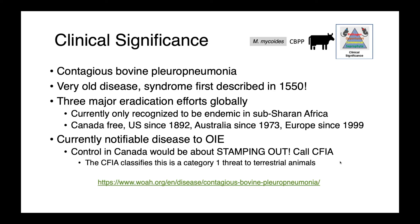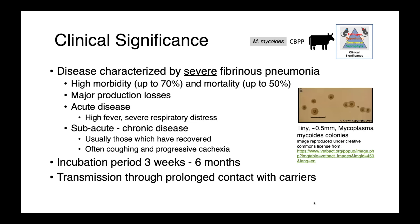Control would involve humane depopulation of the animals and decontamination of the premises. CBPP is characterized by severe fibrinous pneumonia with a very high morbidity rate — up to 70% of animals in affected herds can be sick, and up to 50% of those who are sick can die, resulting in major production losses. In acute disease, we see high fever and severe respiratory distress. In subacute to chronic disease, we see animals which have typically recovered from the acute phase but have an ongoing persistent cough and progressive cachexia.